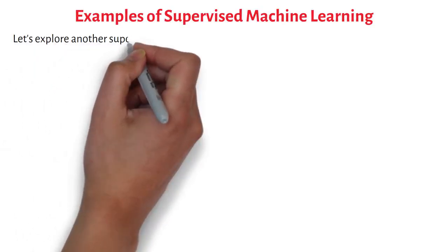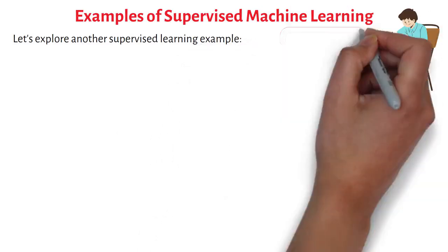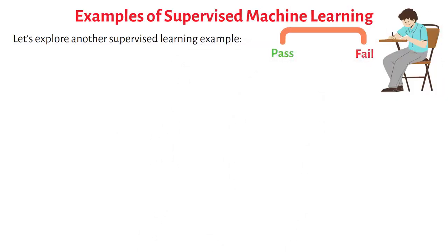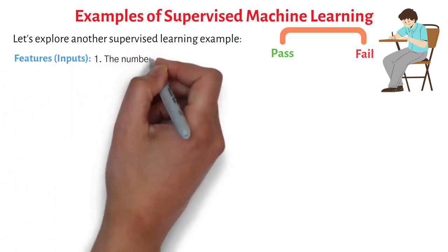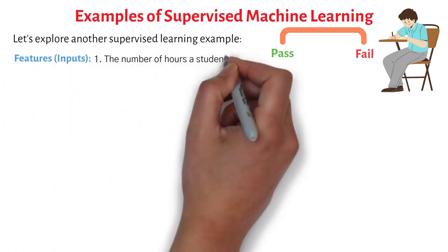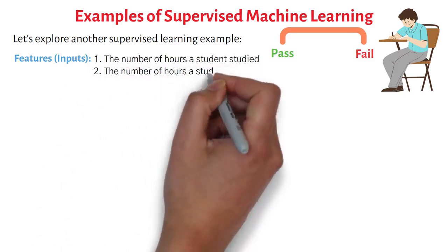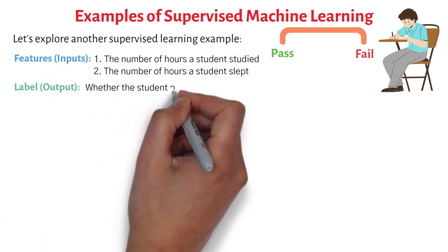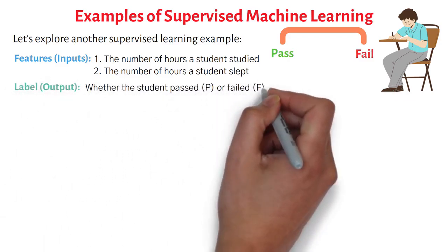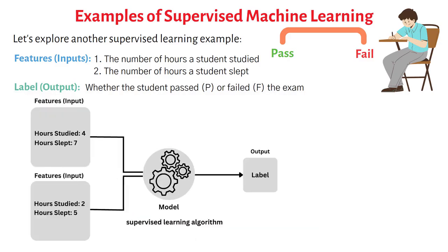Let's explore another supervised learning example where we predict whether a student will pass or fail an exam based on two features. Features — inputs: 1. The number of hours a student studied. 2. The number of hours a student slept. Label — output: Whether the student passed or failed the exam.